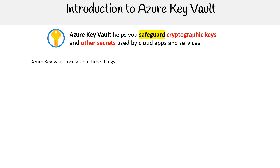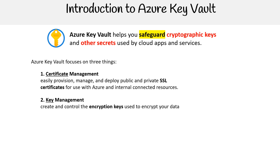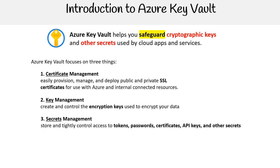Azure Key Vault focuses on three things. The first is certificate management — easily provision, manage, and deploy public and private SSL certificates for use with Azure and internal connected resources. Second is key management: create and control the encryption keys used to encrypt your data. Third is secrets management: store and tightly control access to tokens, passwords, certificates, API keys, and other secrets.